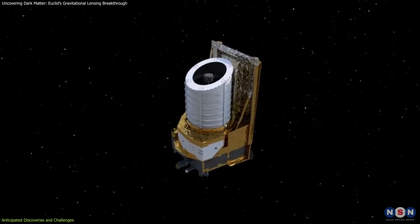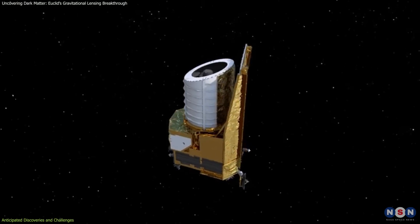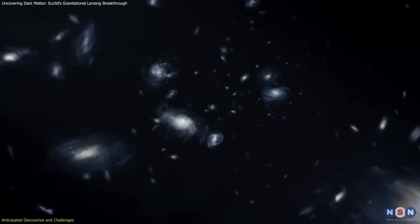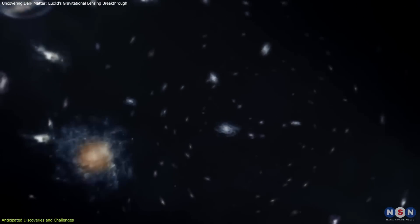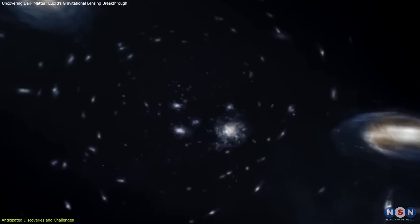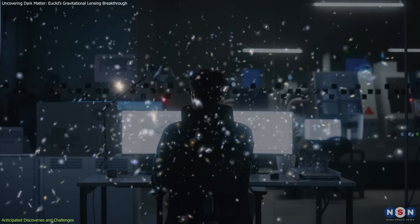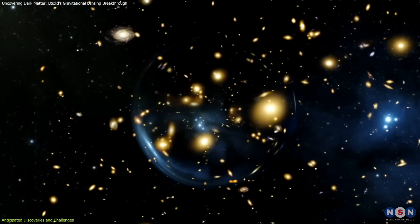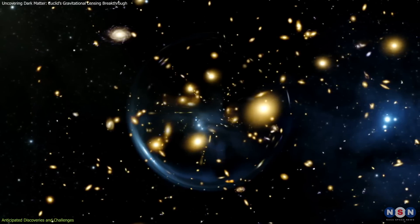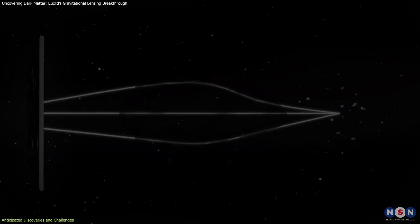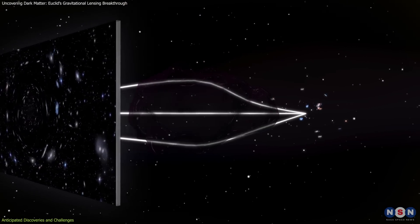However, the mission faces significant challenges, particularly in managing its enormous dataset. Capturing images of billions of galaxies across 15,000 square degrees generates a data deluge, making manual analysis impractical. Identifying strong gravitational lenses within this dataset is akin to finding needles in a haystack, especially given the rarity of such events.